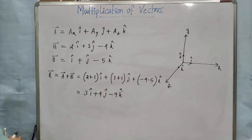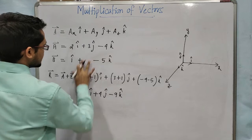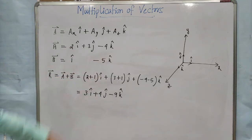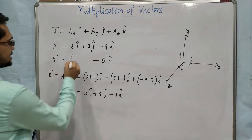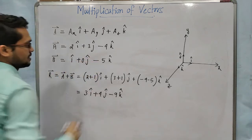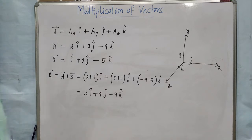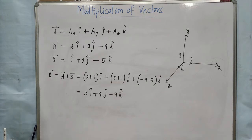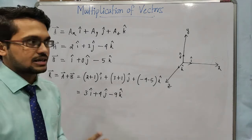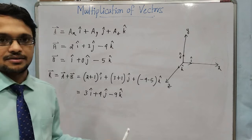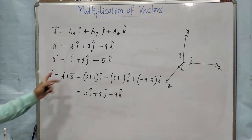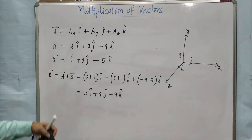If any component is not there — suppose here J is not there, like i-cap − 5k-cap — you take the J component as 0j. If any unit vector is not there, you take 0 times that unit vector. In this way, addition is very simple — just add the components separately.